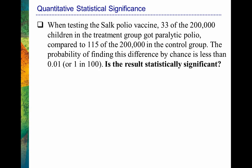That brings us to the next example. When testing the Salk polio vaccine, 33 out of 200,000 children in the treatment group got paralytic polio — those are the kids actually taking the polio vaccine. This was compared to 115 out of 200,000 in the control group, who received a placebo instead of the new vaccine. Now that's a big difference. We're looking at the same number of people in each group — 200,000 in the control group, 200,000 in the treatment group — 33 acquired polio in the treatment group, 115 in the control group. That's like three and a half times as many people in the group who received the actual treatment. So we can compute that probability.